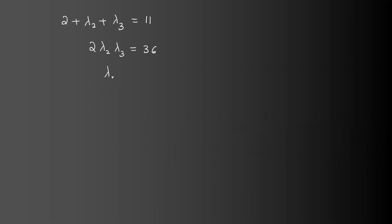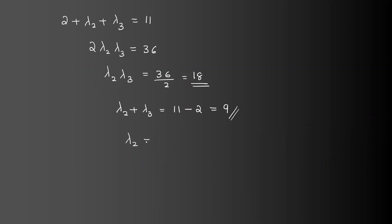Lambda 2 times lambda 3 equals 36 divided by 2, which is 18. Solving these equations gives lambda 2 equal to 6 and lambda 3 equal to 3, with lambda 1 equal to 2.